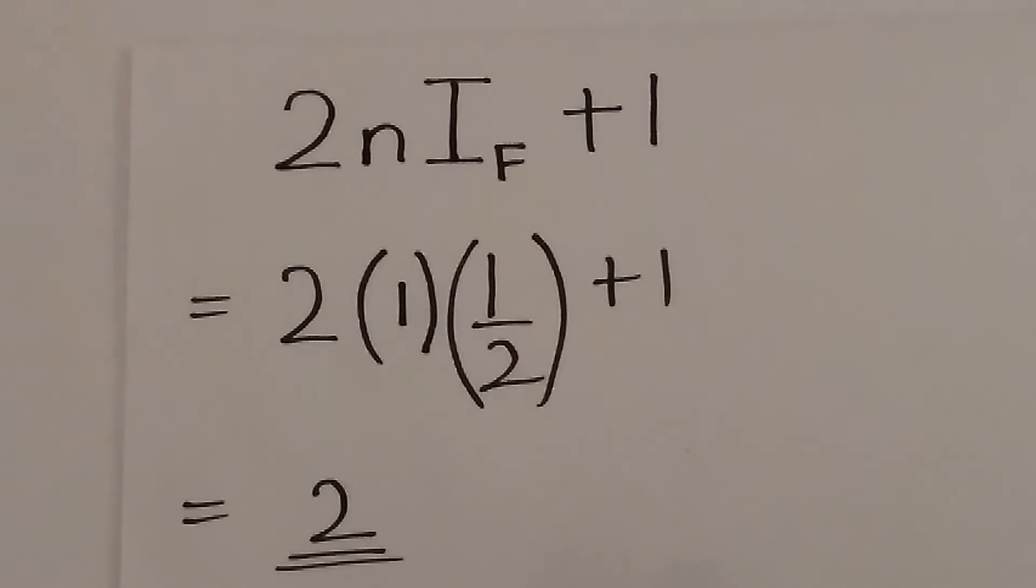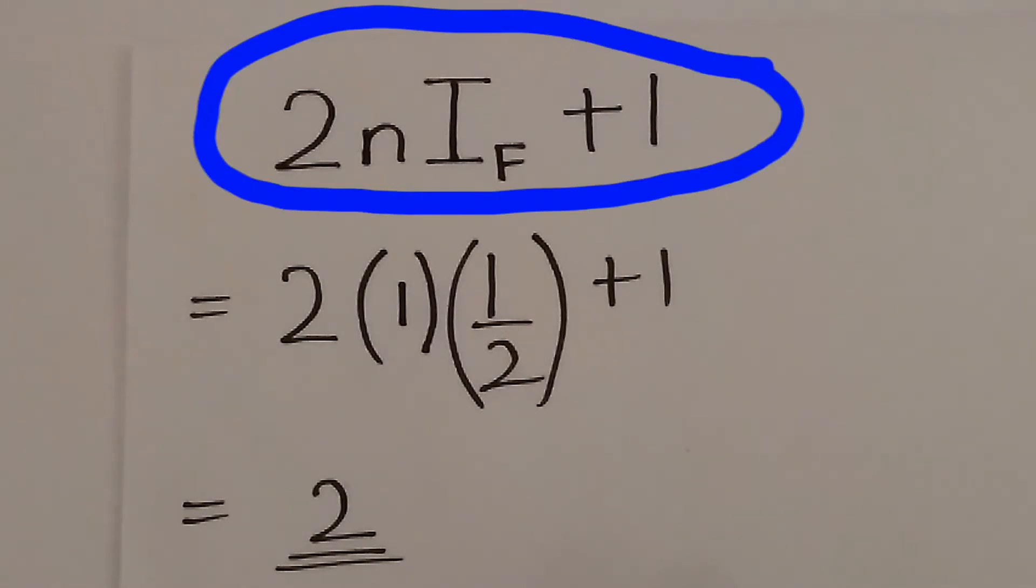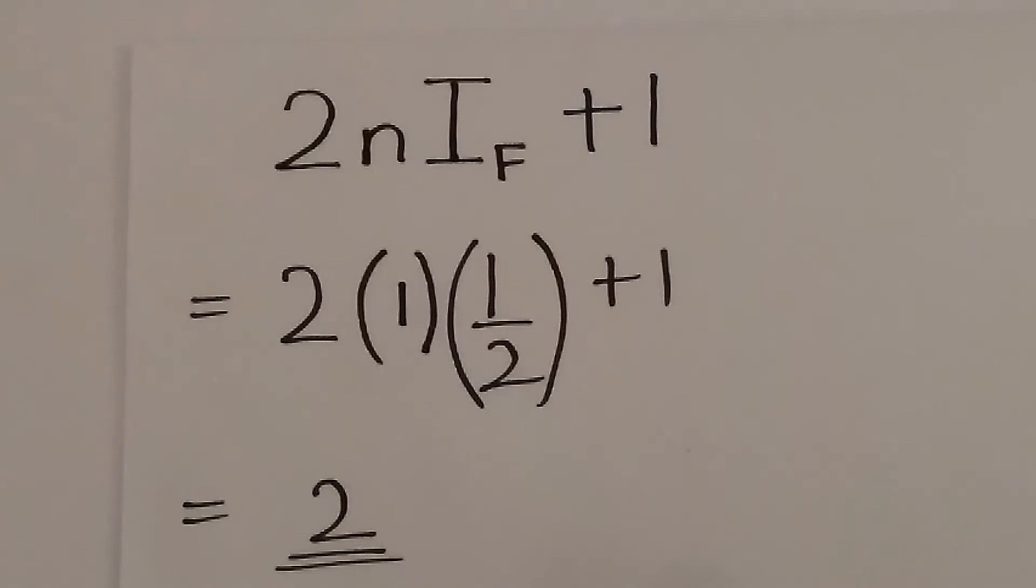In this formula, 2NI plus 1, since both fluorines have the same environment, the value of N will be 1 in this case, and spin state is half. After substituting the values and solving, we get the value as 2.